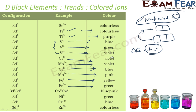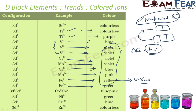The color we see is actually the complementary color — the color which is not absorbed. For example, if the color absorbed is violet, the color observed is yellow. If the color absorbed is blue, the color observed is orange. If the color absorbed is red, the color observed is green, because green and red are complementary. If the color absorbed is violet, you see yellow. And if the whole ion looks green, the color absorbed is red.